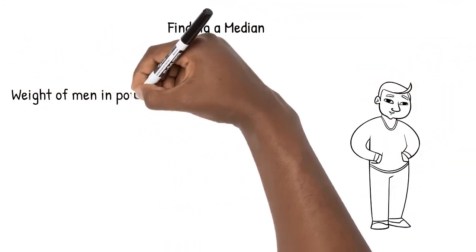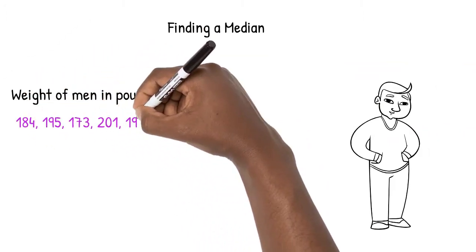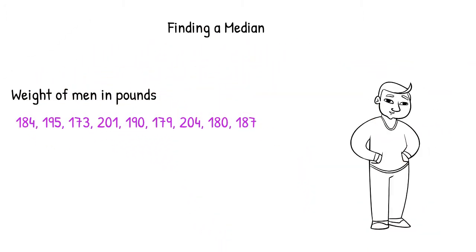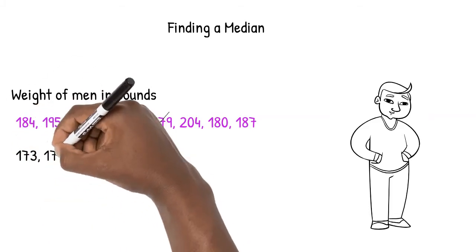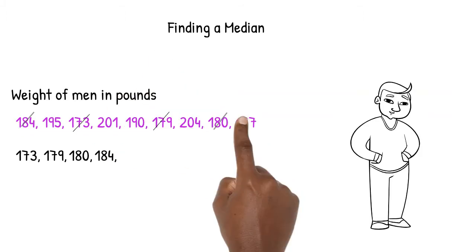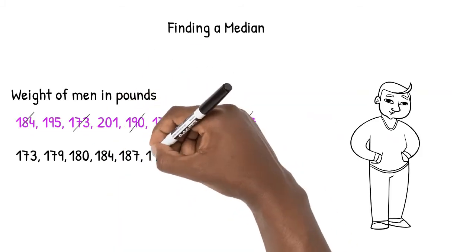Let's look at the weights of a group of men. If asked for the median, we have to find the middle number when the numbers are arranged in order. We can start by rearranging the numbers, listing the smallest number first, and getting larger as we go.